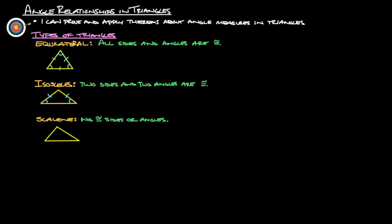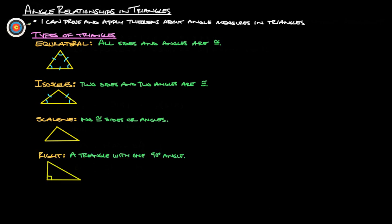Next we have scalene, which has no congruent sides or angles — none of these sides are the same, and none of the angles are the same. And then the last one is a right triangle, which has exactly one 90-degree angle.